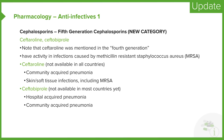Fifth generation cephalosporins have activity against gram-positive bacteria including MRSA, as good as vancomycin or aztreonam. Ceftaroline is approved for use in community-acquired pneumonia and skin and skin structure infections. Ceftobiprol binds to PBP2B in MRSA and is approved for use in both hospital-acquired pneumonia and community-acquired pneumonia. It is an intravenous drug only.